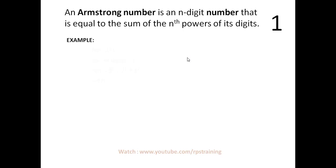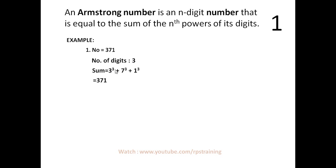For example, suppose a number 371. The number of digits is 3, so we find the result using 3 cube plus 7 cube plus 1 cube, where 3 is used as the power of each digit. The result will be 371. If the original number and the sum are both the same, then that number is known as an Armstrong number.